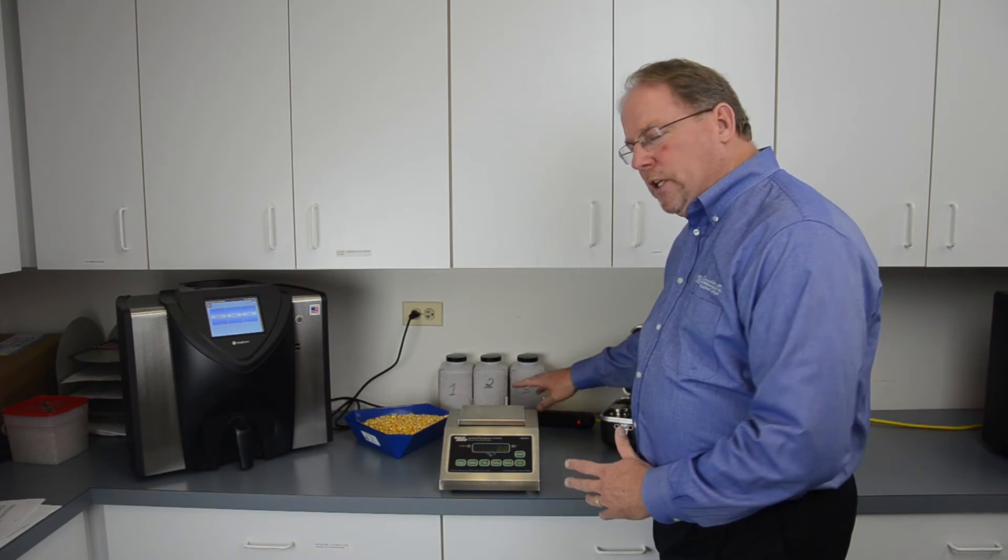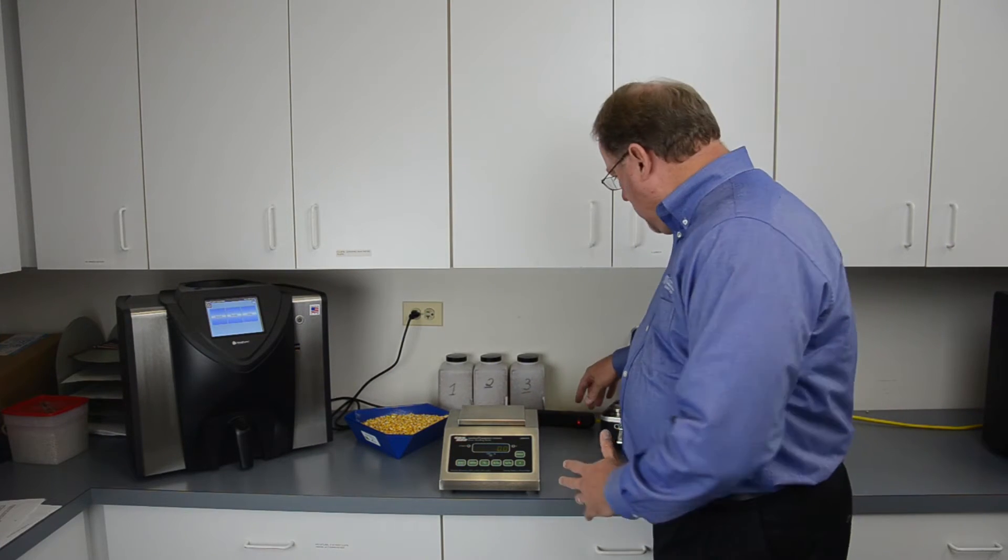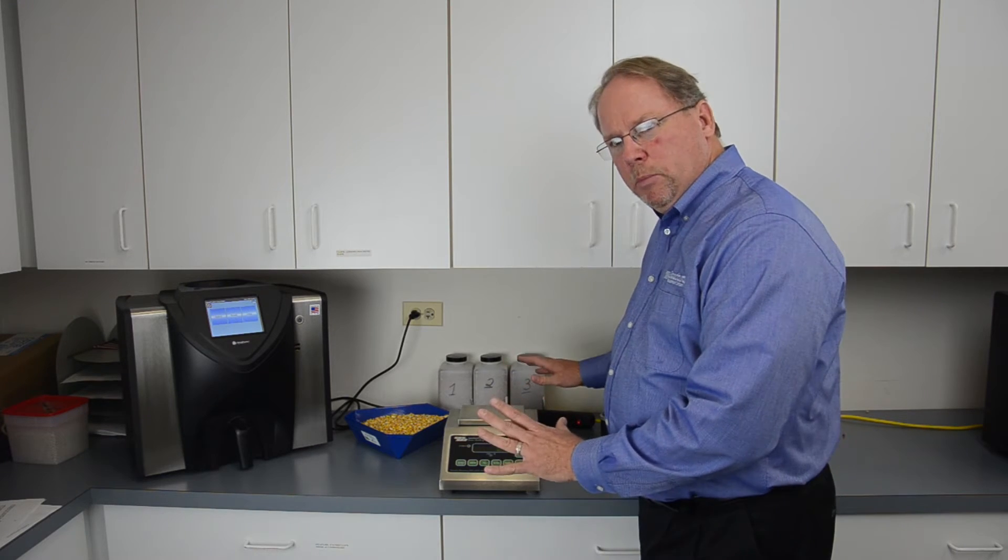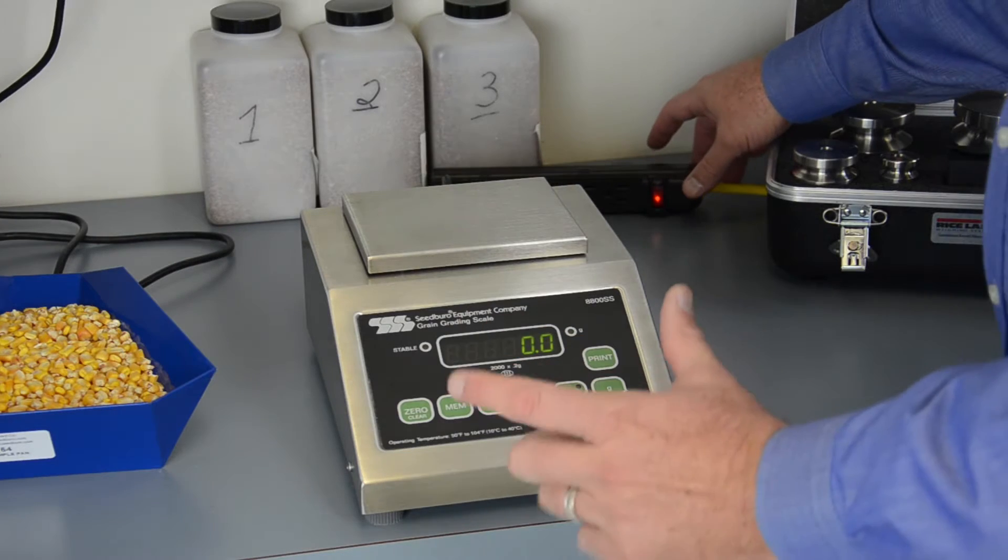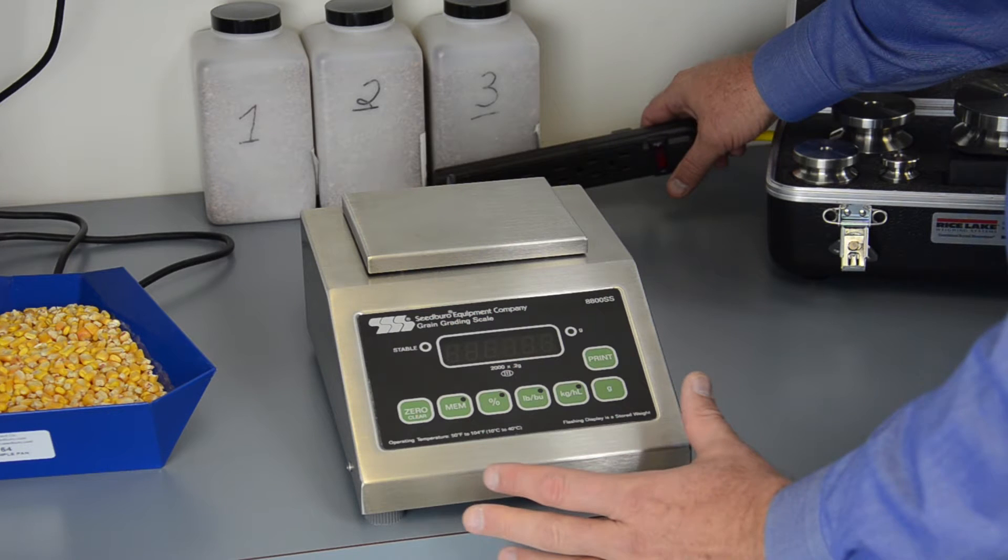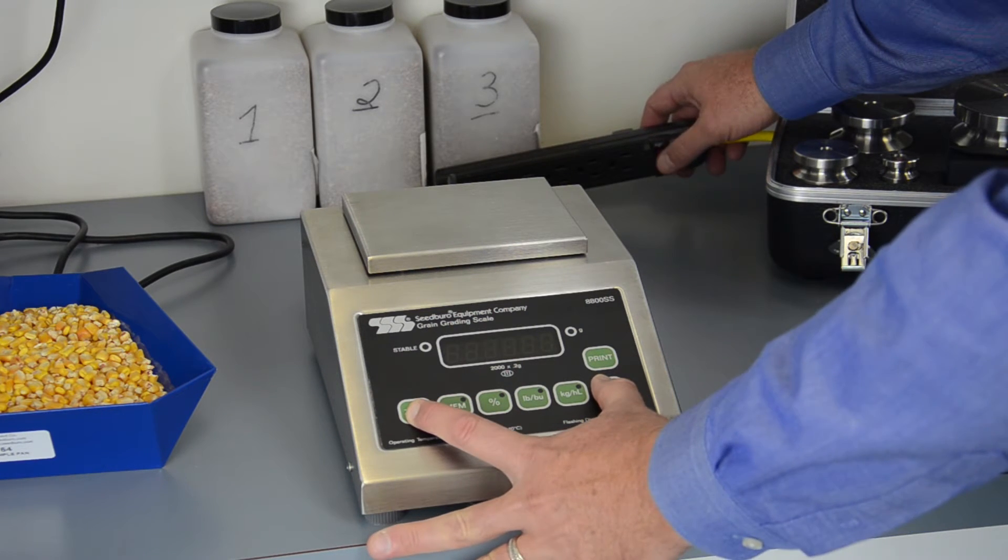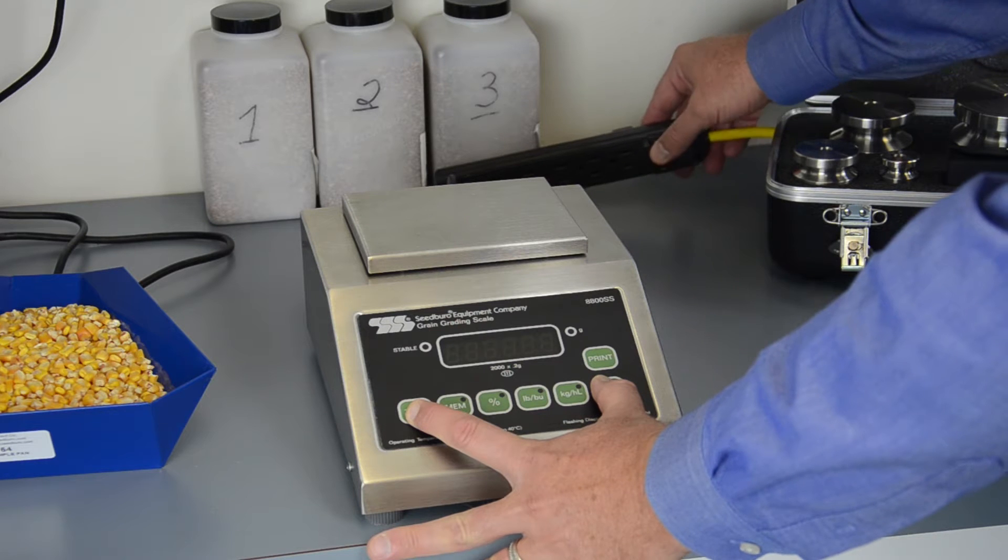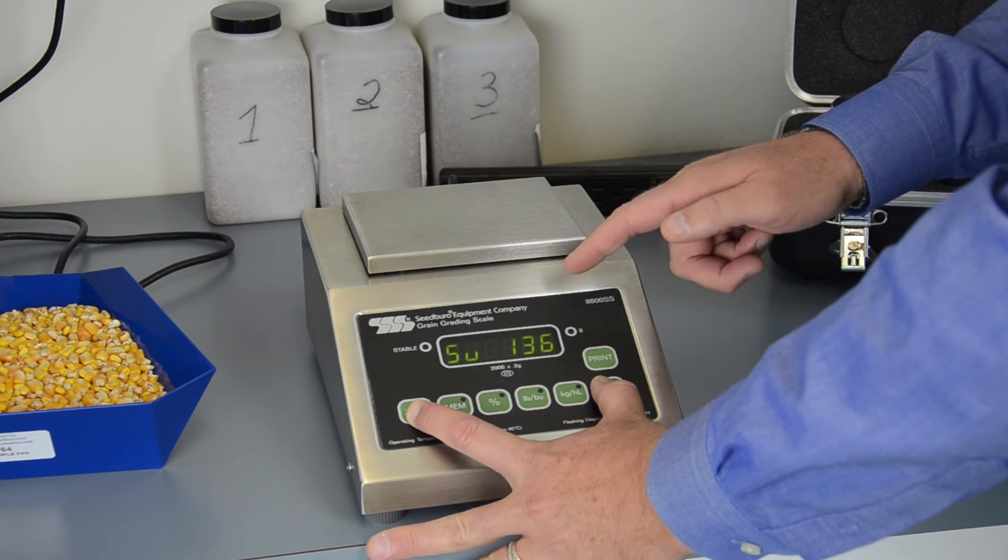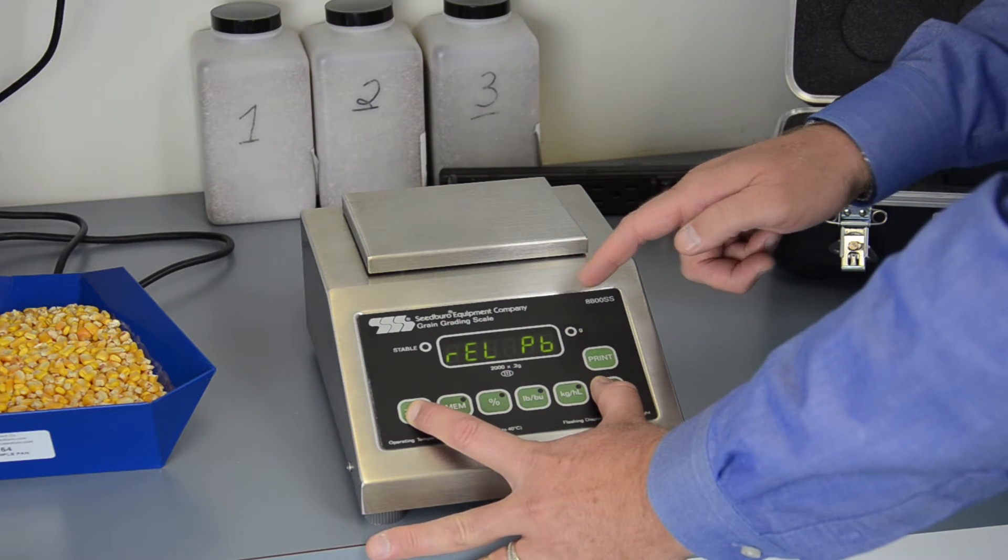The process starts with plugging the instrument into a power strip. For those with three hands, it's not a problem, but I only have two. So you have to shut the instrument off first, hold the zero and gram button, turn the instrument on, and when the display shows the revision level PB, you release.